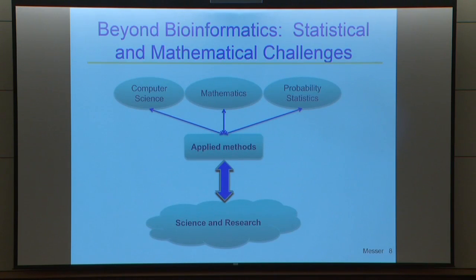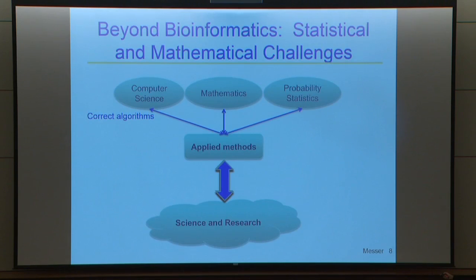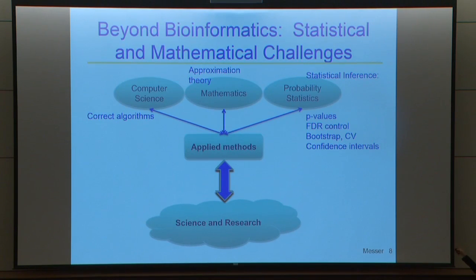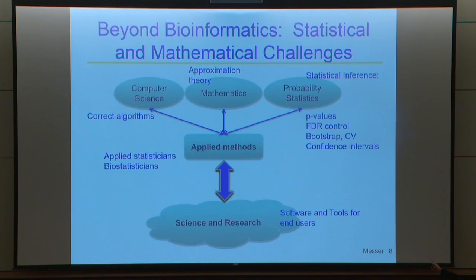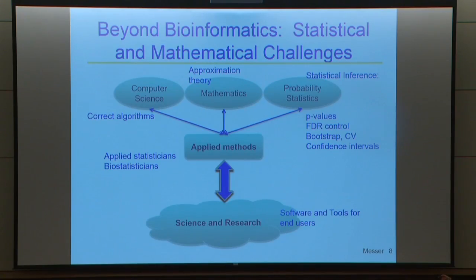Here's my schematic of Beyond Bioinformatics. Computer science, mathematics, probability and statistics — these are the theoretical disciplines. Then there's applied methods. Then there's science, research, and the clinic. Computer science provides correct algorithms; mathematics provides linear algebra and basic tools; probability and statistics provides statistical significance and p-values — that's the theory. Applied methods is where biostatisticians live. And then software and tools for end users — that's what the postdocs use. They are brilliant at scanning what's out there, picking up tools and using them. What we're trying to do is increase the pipeline flow from theoretical rigor to the application of tools down in the clinic.